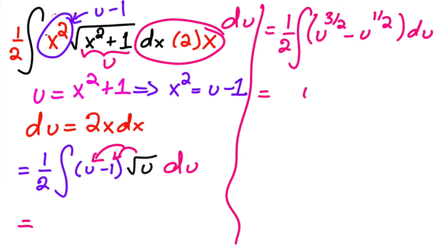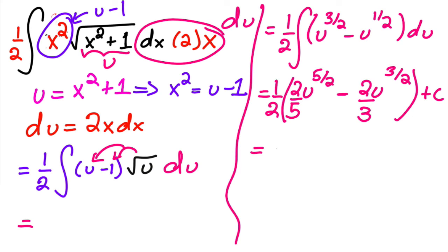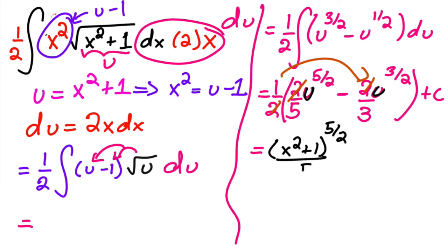Integrating: u^(3/2) becomes u^(5/2)·(2/5), and u^(1/2) becomes u^(3/2)·(2/3). Distributing the 1/2 and substituting u = x² + 1 back in, the final answer is (x² + 1)^(5/2)/5 − (x² + 1)^(3/2)/3 + C.